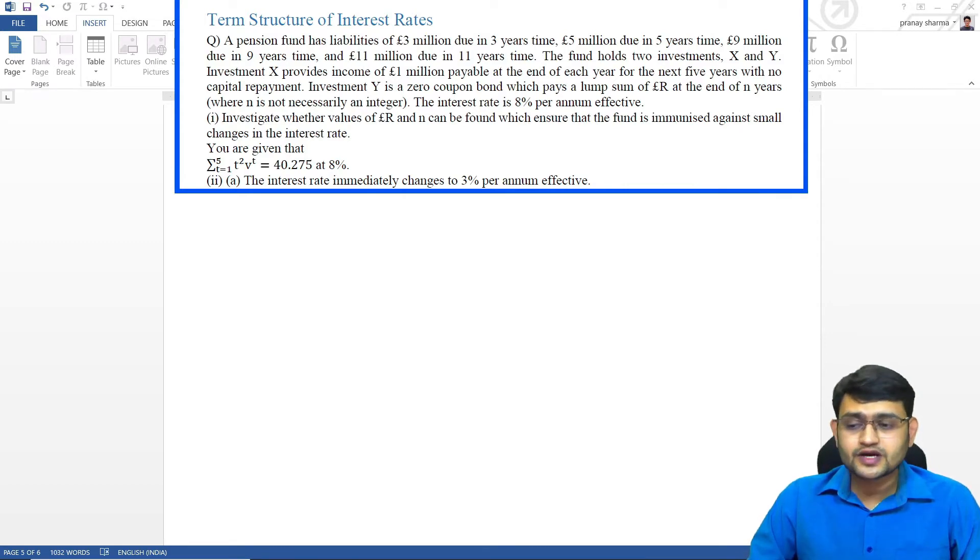I've taken a typical term structure of interest rate question of Reddington's 3 laws where they have given us assets and liabilities and we have to first investigate whether the value of some R and N can be found which ensures that the fund is immunized against small changes in interest rate. We'll be using the present value formula as well as our DMT formula to find this R and N.